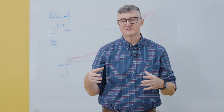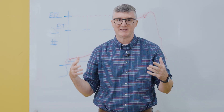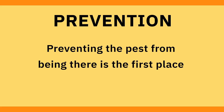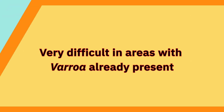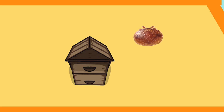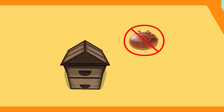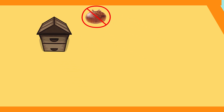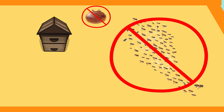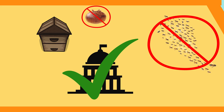The way IPM is best understood is as a pyramid — the IPM pyramid. The bottom of that pyramid is prevention, which means preventing the pest from being there in the first place. This is very difficult in areas where Varroa are already present everywhere. For example, in Florida it would be very hard to prevent Varroa from being in my colony. But in theory there are places where you might buy packages or nucs that don't have Varroa. Other prevention measures include controlling swarming so you're not releasing Varroa into feral colonies, and government regulations that limit bee movement to prevent Varroa from reaching an area.